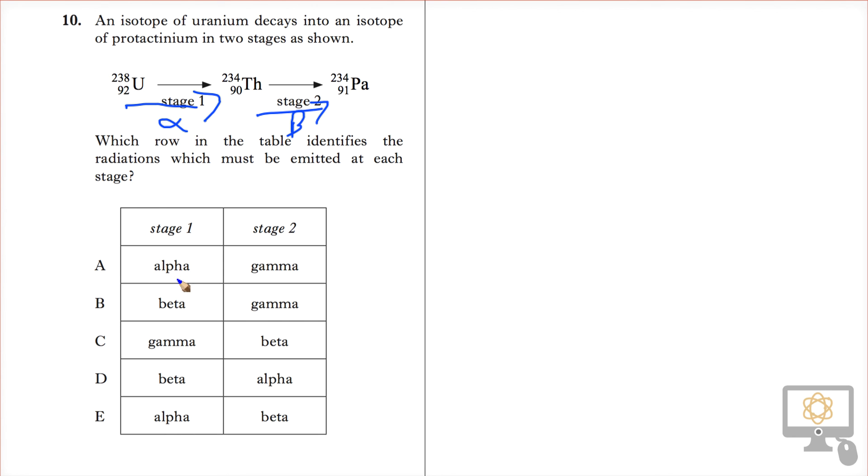So it's alpha followed by beta. In the table that is E, and so that is the correct answer.